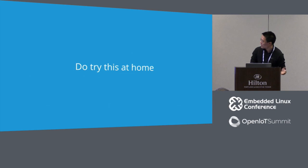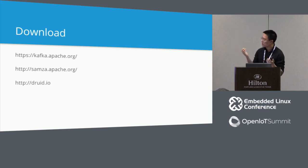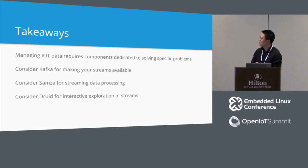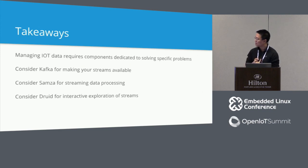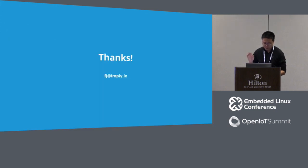To summarize, all the technologies I talked about are open source. Each of these projects has its own project web page and you can download any of them. The three I talked about work out of the box with one another — you can download them, install them, load your own event streams, and try things out. Managing IoT data requires dedicated components targeted towards solving very specific problems: data delivery handled by Apache Kafka, data processing handled by Apache Samza, and interactive query of streams handled by Druid. That concludes my talk, and I'm happy to answer any questions.